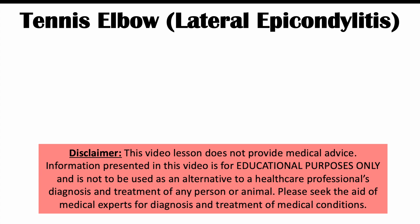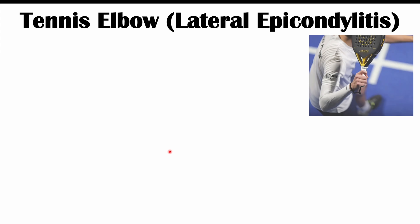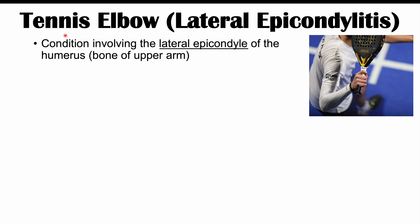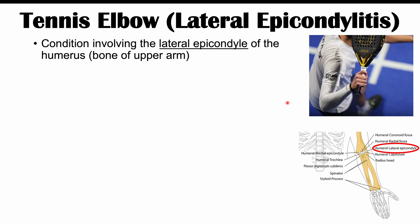This lesson is on the condition known as tennis elbow, also known as lateral epicondylitis. Lateral epicondylitis involves the lateral epicondyle of the humerus, which is the bone of the upper arm. As shown in this image, the humeral lateral epicondyle is where this condition occurs. We'll discuss this further when we cover the pathophysiology in the next slide.